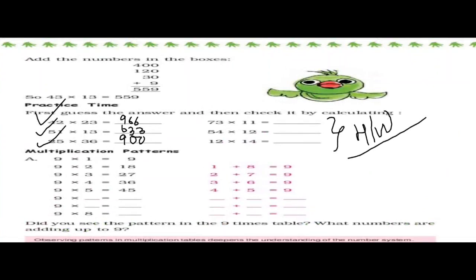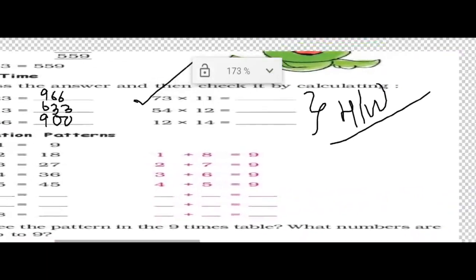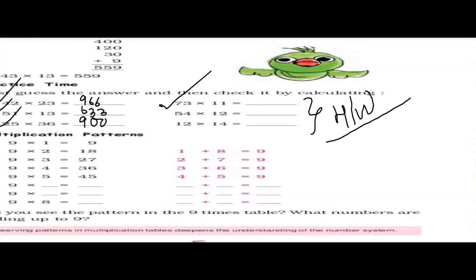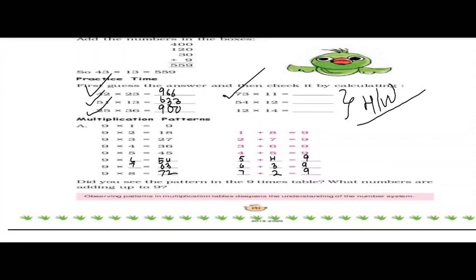This will be your home assignment. You can also see the multiplication pattern. There is a table of 9 — 9 ones are 9, 9 twos are 18. Here you can see 1 plus 8 is 9, 2 plus 7 is 9, 3 plus 6 is 9, 5 plus 4 is 9. For 9 sixes which are 54, 5 plus 4 is again 9. For 9 sevens which are 63, 6 plus 3 is 9. For 72, 7 plus 2 is 9. So the digits in every multiple of 9 always add up to 9.